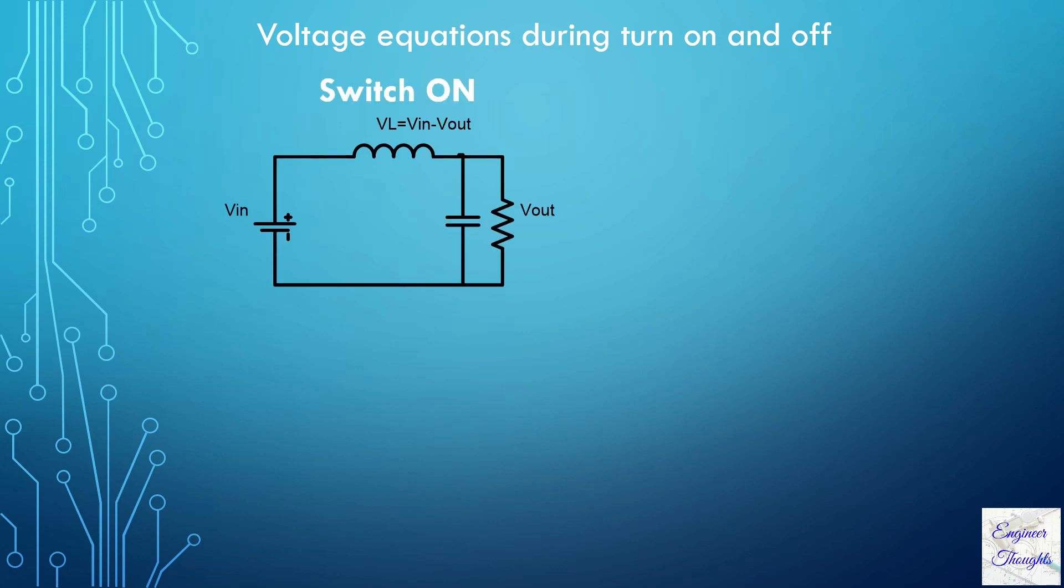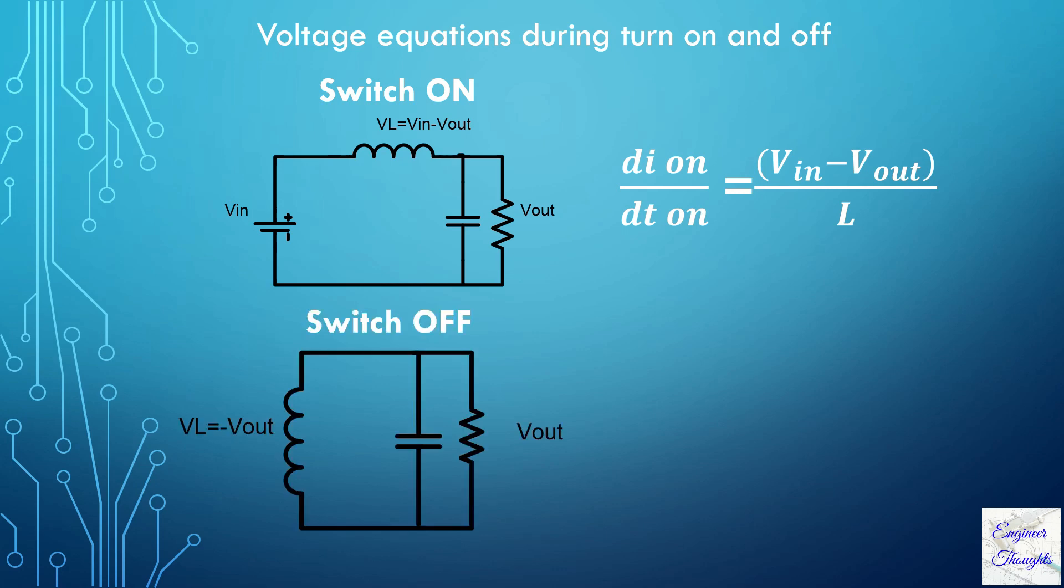By Lenz law, we can write the change in current across the inductor during the turn-on time, that is dI_on/dt equals (V_in - V_out)/L. Similarly, during the turn-off time, it can be seen as dI_off/dt equals minus V_out/L.